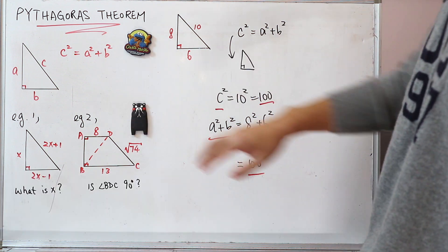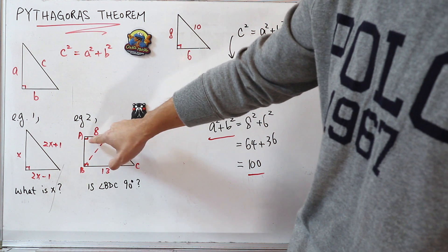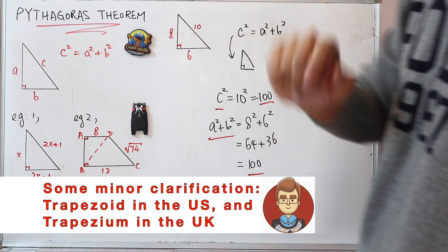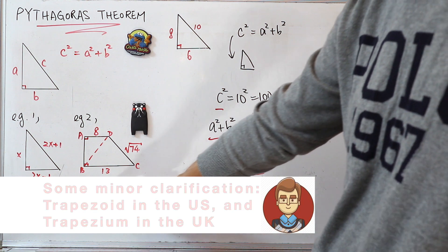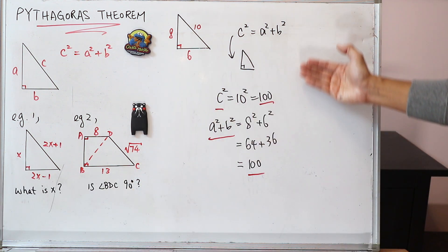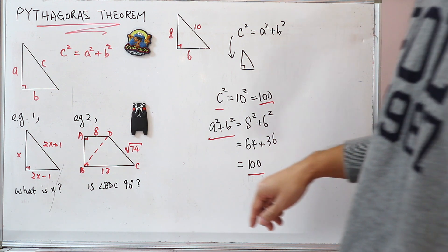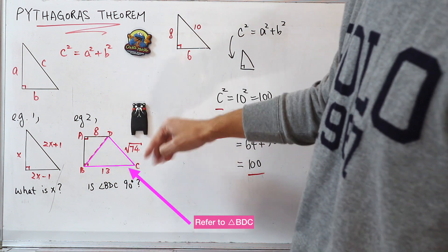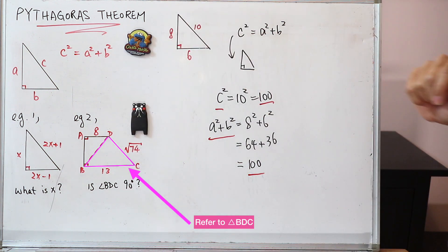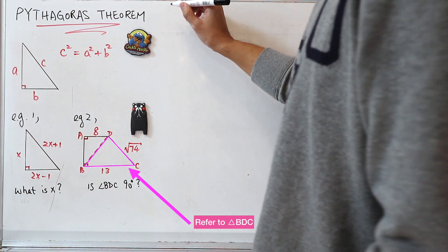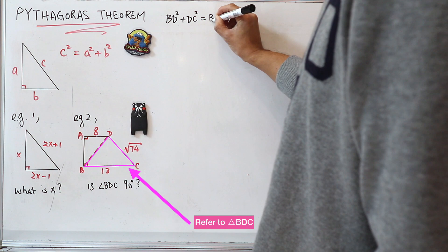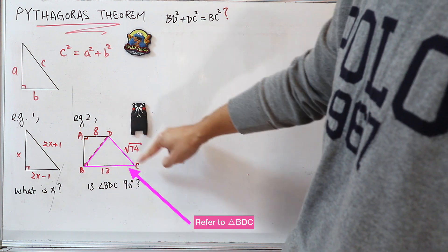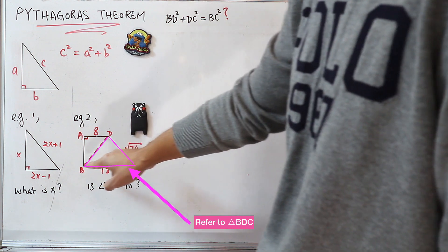So now let's go back to example number two. You're given a figure where this angle is a right angle and this is also a right angle — so in essence, this is a trapezoid. The question is asking you whether angle BDC is 90 degrees. By applying the converse of Pythagoras theorem, if you can prove that BC squared equals BD squared plus DC squared, then we can prove that this angle is a right angle. You are given the length of BC and the length of DC, but you don't know the length of BD, so you need to find it.